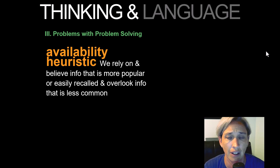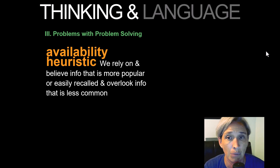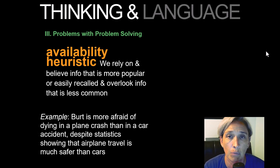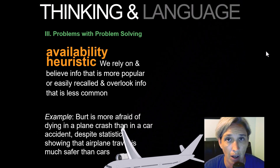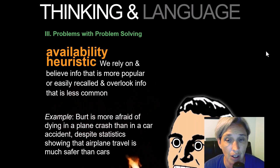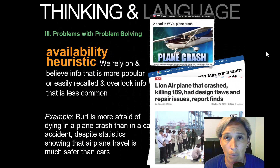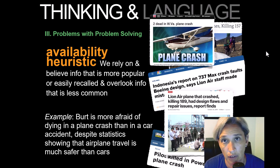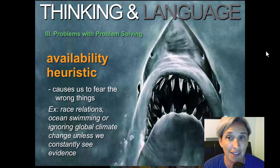Now let's switch to availability heuristics and problems there. The availability heuristic, from the first lesson, is what is readily available in our mind — what pops into our mind — because we rely on information we believe is more popular or easily recalled and overlook what is less common. For example, Bert is more afraid of flying because he hears about plane crashes more than car crashes, even though car crashes are more frequent. When a plane goes down, it's major news, which leads some people to a fear of flying. Availability heuristics are problems because they cause us to fear the wrong things.